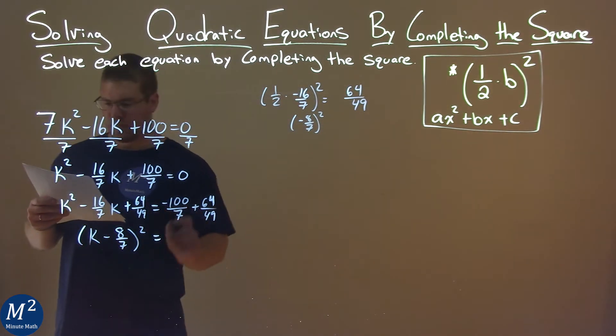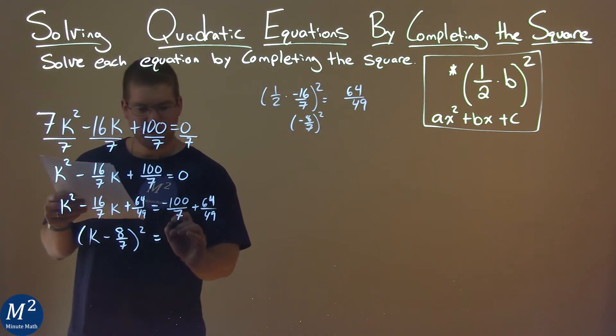And that's equal to, on the right-hand side, a pretty big fraction, negative 636 over 49.